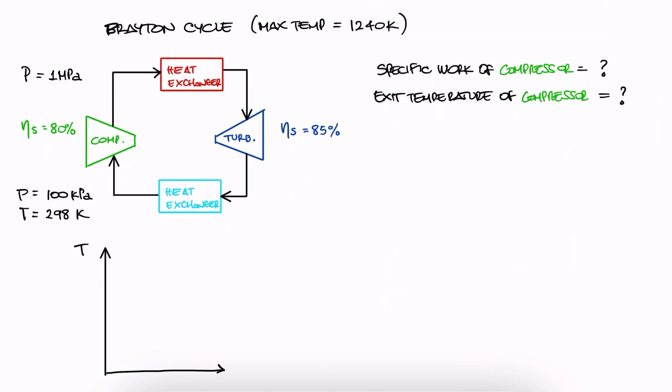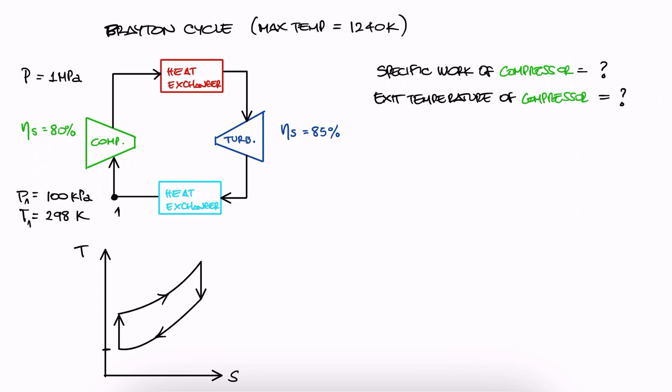Let's start by plotting a TS diagram for this cycle. If we call the air before the compressor state 1, we would see the temperature of 298 kelvin as T1, and T3 would be the maximum temperature. In the real cycle, real 2 is just to the right of 2S, just as 4 is to the right of 4S.